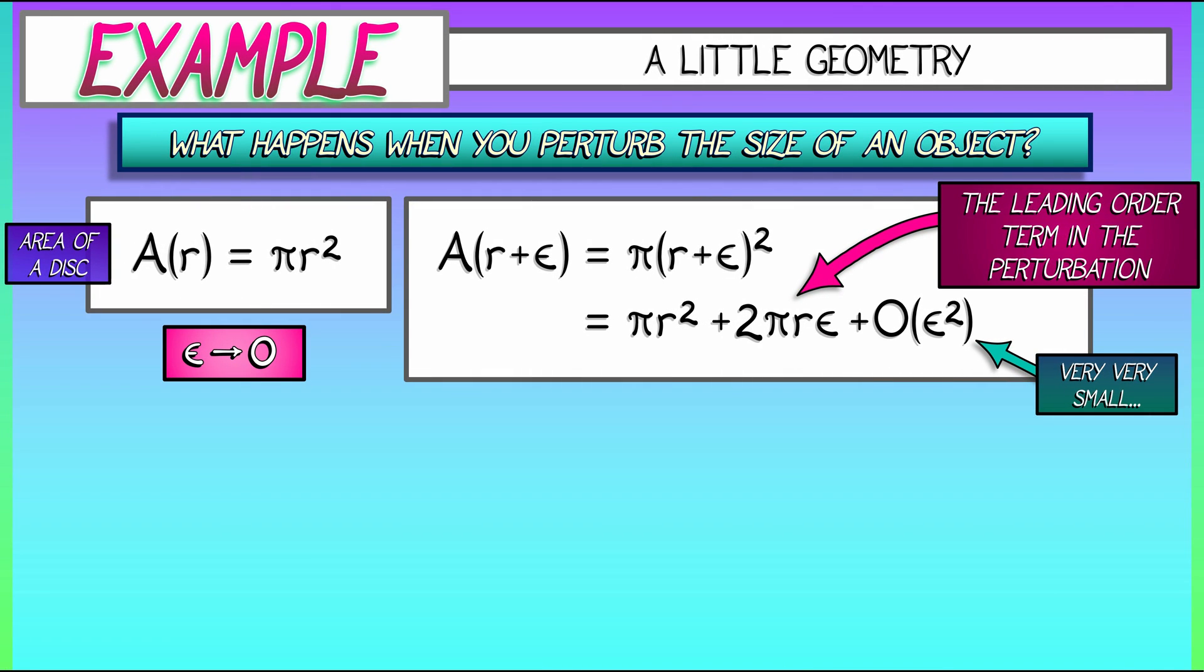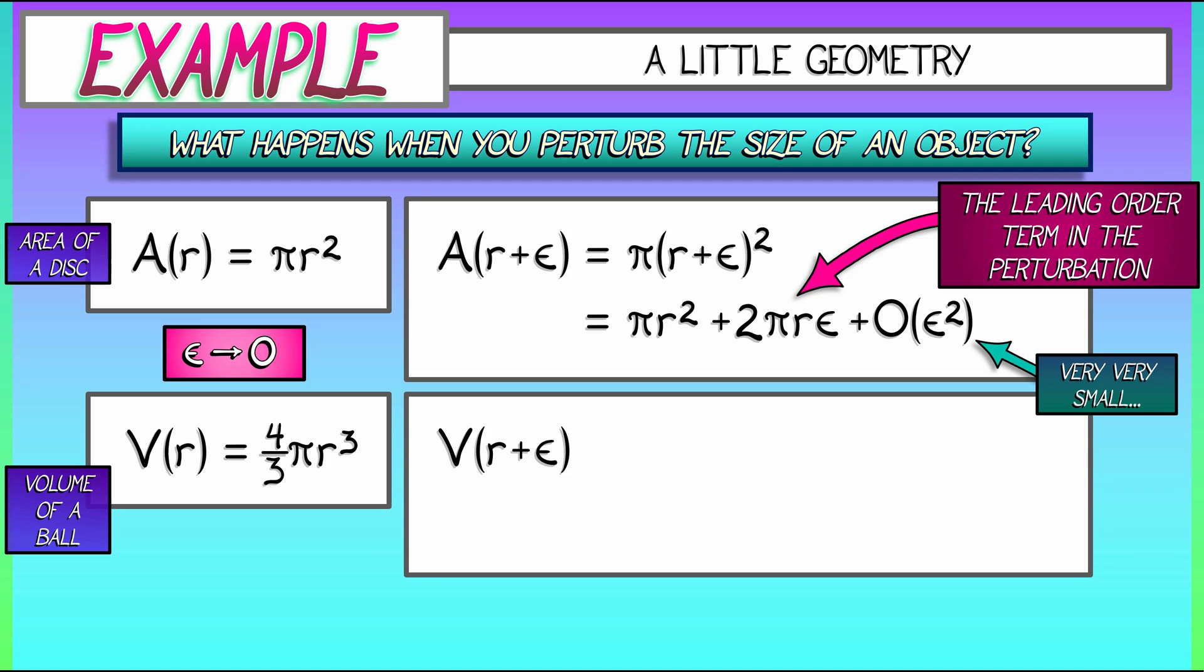Let's redo this. Let's do this again, but for the volume of a ball. We know the formula for that. Four thirds pi r cubed. We know how to do the algebra there. What happens when you increase or change the radius by epsilon? Epsilon could be negative, by the way. You get four thirds pi times quantity r plus epsilon cubed. Let's do the algebra.